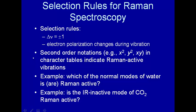For infrared absorption spectroscopy, we looked at the irreducible representation corresponding to a particular vibration and checked in the character table whether one of the Cartesian coordinates x, y, or z had the same irreducible representation as that normal mode. For Raman spectroscopy, it's not just x, y, or z — it's a second-order term: x², y², z², xy, and so on. If the irreducible representation of the normal mode corresponds to one of these second-order Cartesian terms, then that normal mode is Raman active.